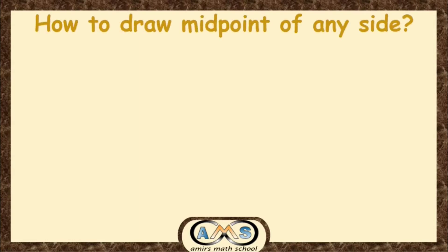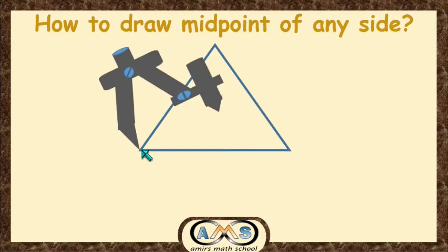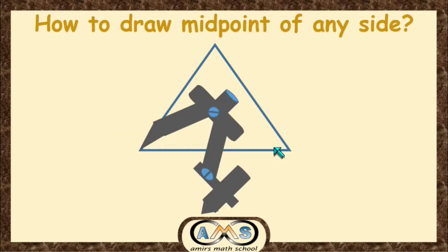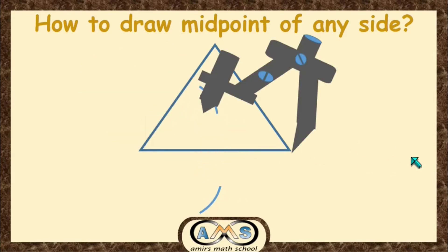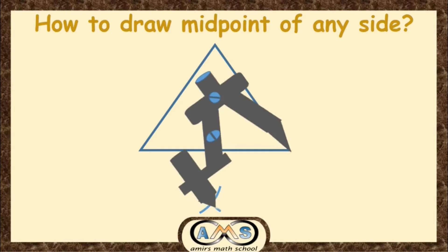Now let's see how to draw the midpoint of any side of a triangle. This is a triangle and we want to draw the midpoint of this side. Taking this point as the center and a radius greater than half of this side, draw one arc on one side of the line, and another arc on the opposite side. Then, taking the other endpoint as the center with the same radius, draw another arc and another one.